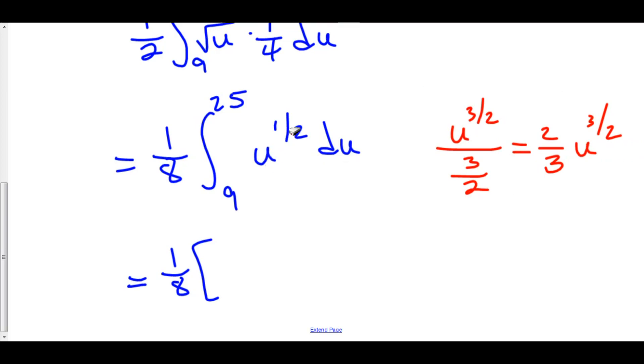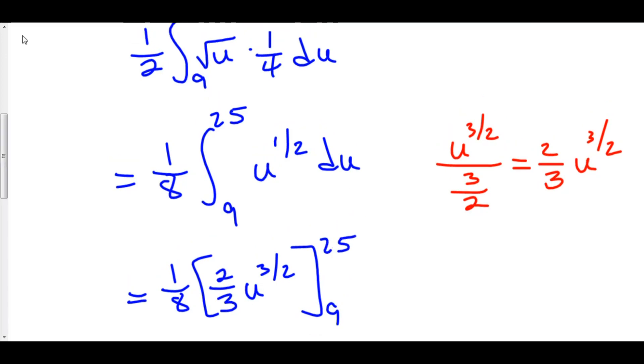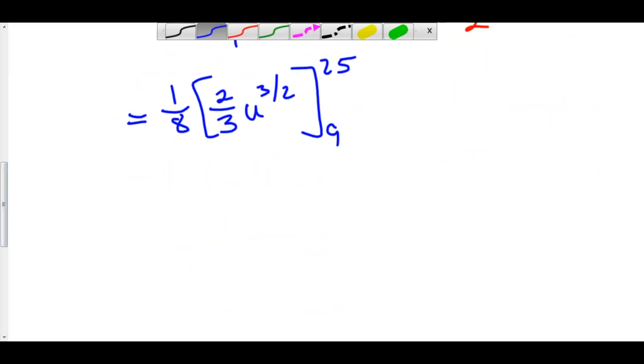But, this is the anti-derivative right here of u to the 1 half. Again, we added 1 to the exponent. 1 half plus 1 gives us 3 halves. And then we divide it by that number as well. But, when we divide by 3 halves, it's the same thing as multiplying by 2 thirds. So, I'm going to rewrite this as 2 thirds u to the 3 halves from 9 to 25. And, of course, we can now take out the 2 over 3. 1 over 8 times 2 over 3 is 1 over 12.